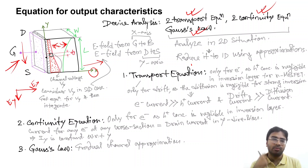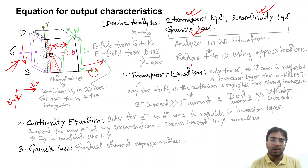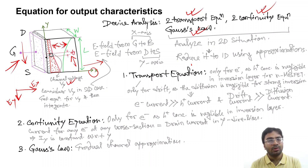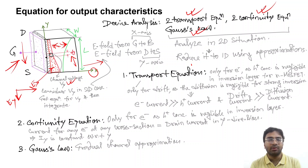Our target would be to reduce the 2D situation into a 1D situation by taking suitable approximations. The approach that I will take is: we will consider a small region, a dy region, and we will consider the voltage in the channel region to be Vy. Then we will try to find the equation for Vy and integrate the solution from y equal to 0 to y equal to L to get the equation for the entire channel.